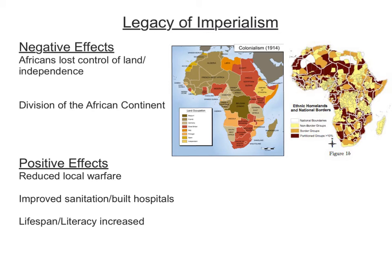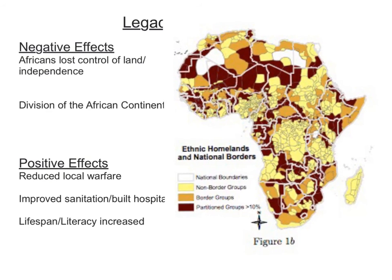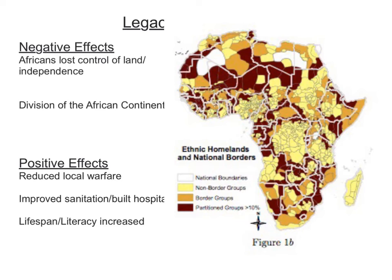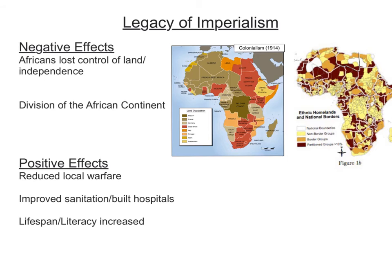The legacy of imperialism — focusing mainly on the negative effects: Africans lost control of their land and independence; they did not have sovereignty over their own land, which was basically controlled by European powers. Also, the division of the African continent — the lines Europeans drew had no regard for the people living there. Several lines go right through ethnic groups, combining groups that might not like each other or dividing groups that do like each other — really a recipe for disaster. The positive effects by no means outweigh the negative, but Europeans did reduce local warfare, improved sanitation, built hospitals, and lifespan and literacy rates increased.